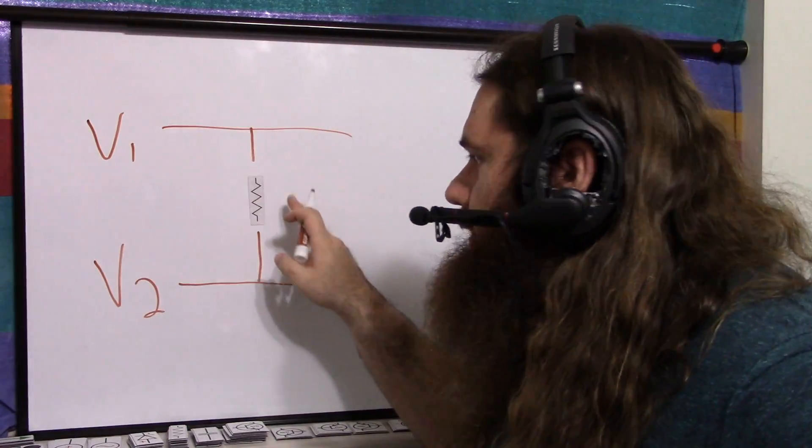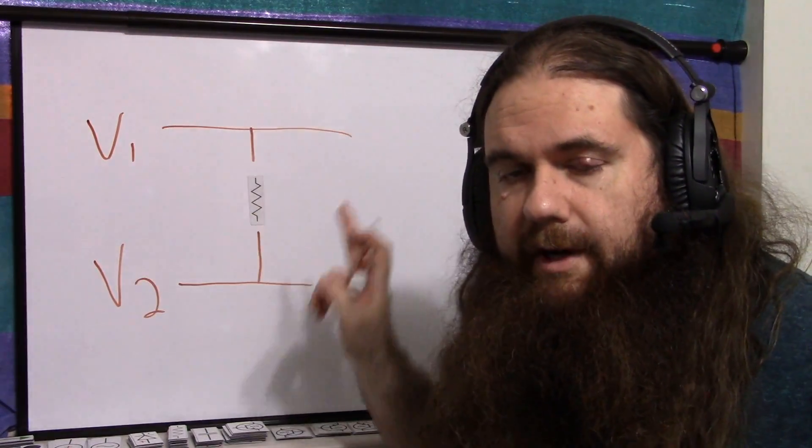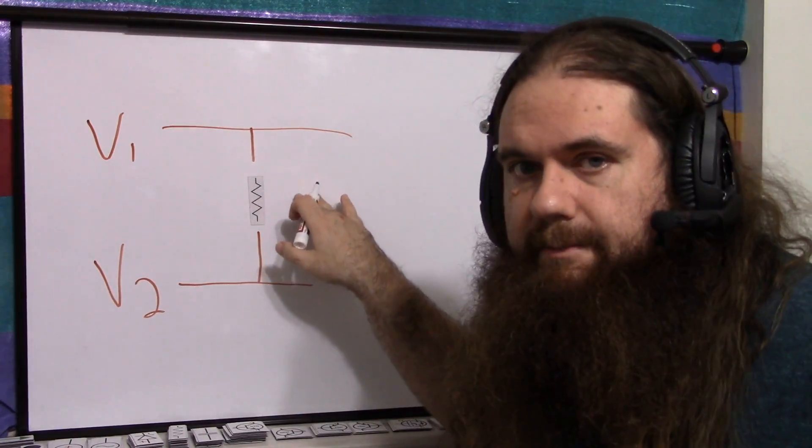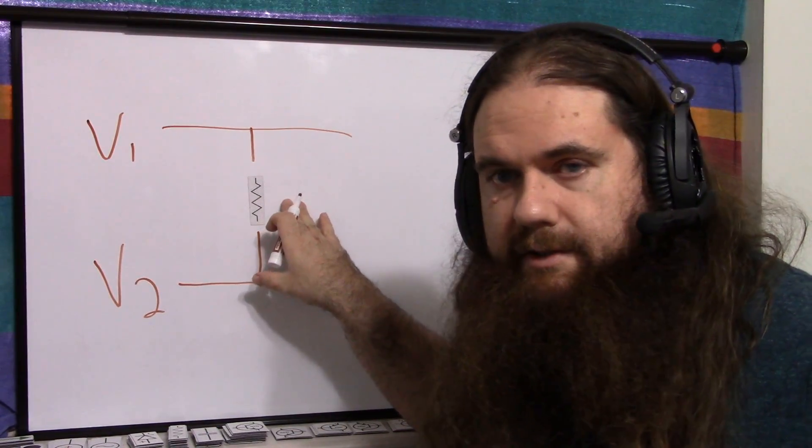There's resistances everywhere, and this actually forms a parallel voltage divider with them. This is why multimeters have high impedance, so that they don't really affect the circuit that they're touching.